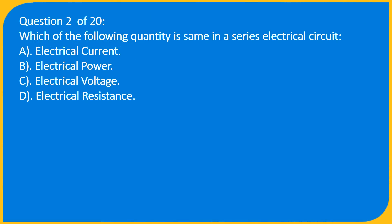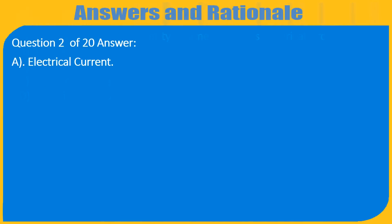Question 2 of 20: Which of the following quantities is the same in a series electrical circuit? A. Electrical current, B. Electrical power, C. Electrical voltage, D. Electrical resistance. Answer: A. Electrical current.